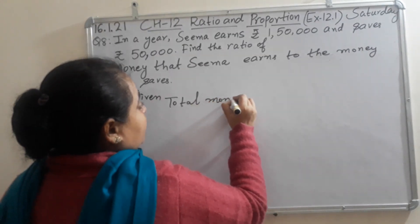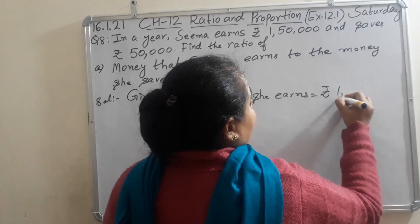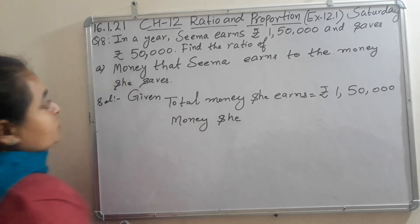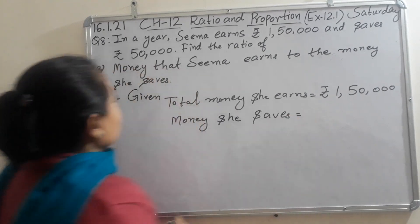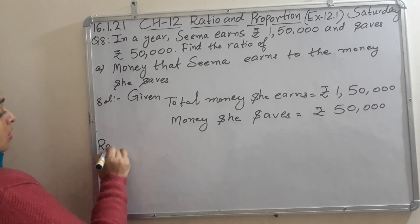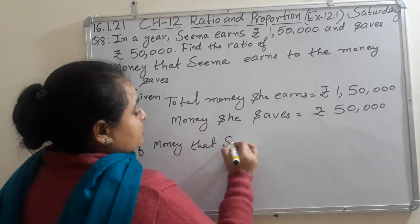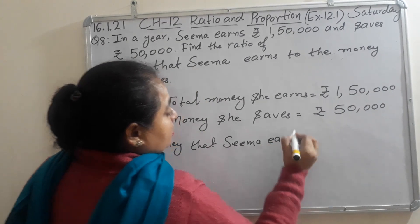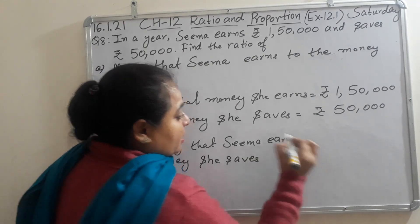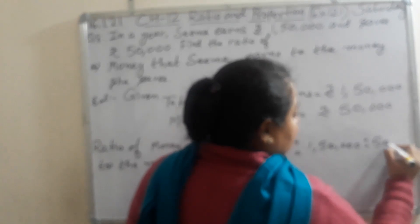Total money she earns: Rs. 1,50,000. Money she saves is also given to you: Rs. 50,000. Now, ratio of money that Sema earns to the money she saves is equal to Rs. 1,50,000 ratio Rs. 50,000.